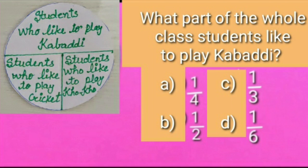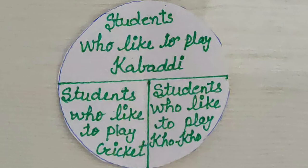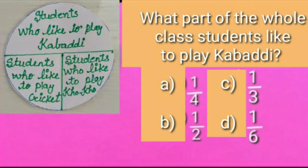Let's see the pie chart that is given to us. In this pie chart, we can see that half part of whole class students like to play kabaddi, and one-fourth part like to play kho-kho, and another one-fourth part like to play cricket. According to our question, half part of whole class students like to play kabaddi, which is option B. So we will put a tick on option B.